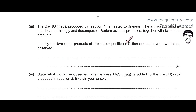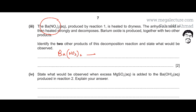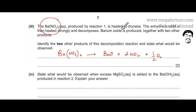Part 3 states that barium nitrate produced in reaction 1 is heated to dryness and then the anhydrous solid is heated strongly and decomposes. Barium oxide is produced together with two other products. All group 2 nitrates decompose in the same way: Ba(NO3)2 → BaO + 2NO2 + ½O2. The two other products are nitrogen dioxide (NO2) and oxygen gas (O2).